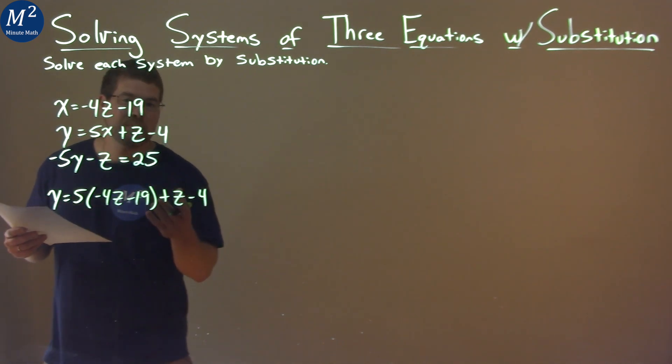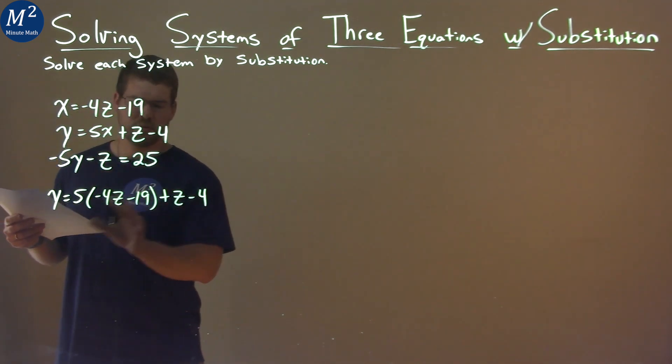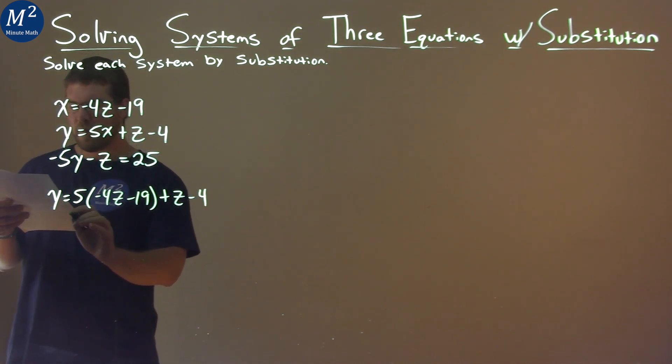So then from here, we want to simplify to get y by itself, or as much as possible to simplify, but keep y by itself. So y equals...